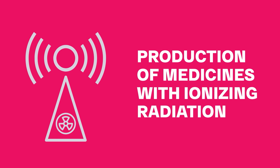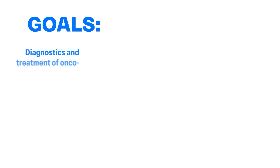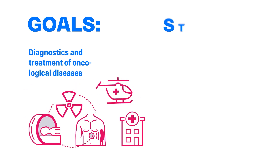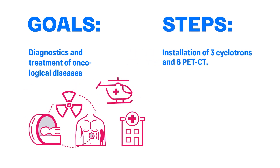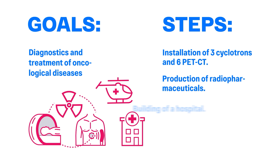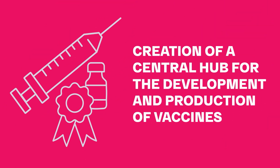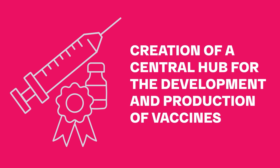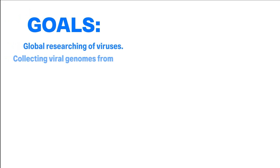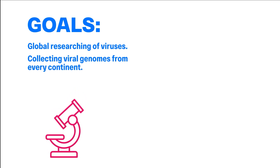Production of medicines with ionizing radiation. Goals: Diagnostics and treatment of oncological diseases. Steps: Installation of 3 cyclotrons and 6 PET CT scanners; production of pharmaceuticals for immediate and delayed administration to the patient; building of a hospital for the treatment of oncological diseases using modern methods; organization of logistics for these medicines with a radius of 1,200 km.